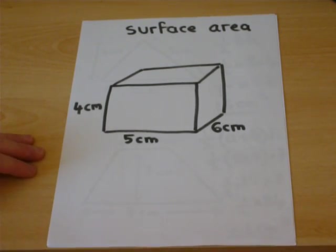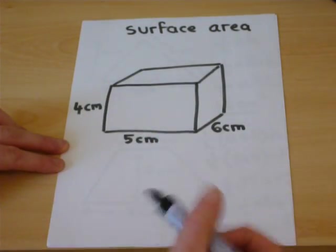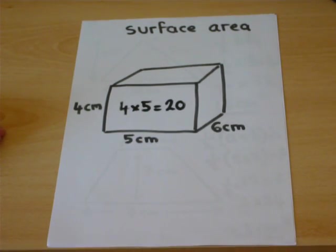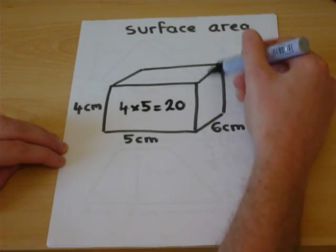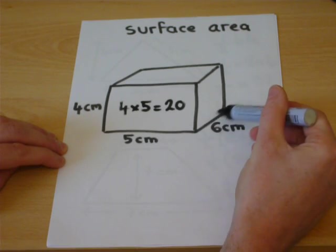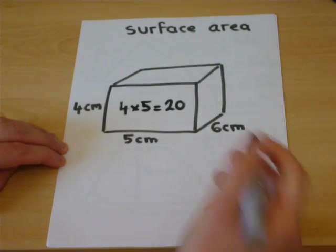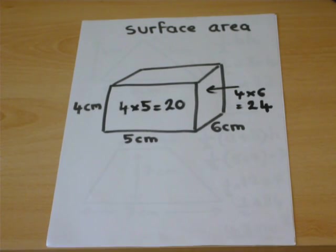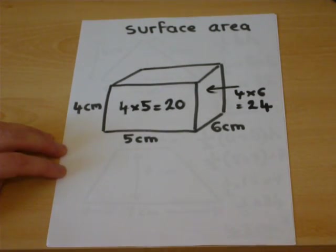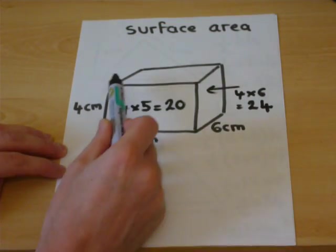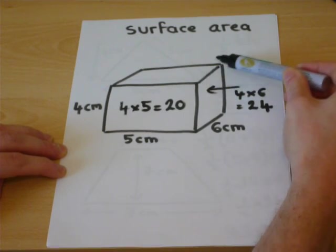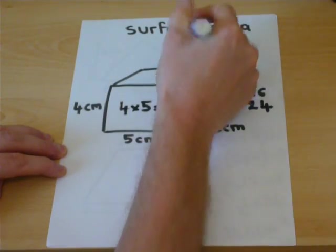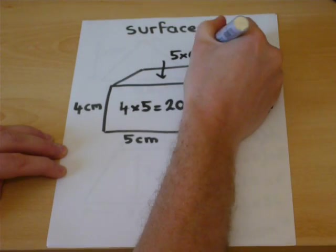For example, we could find the area of this face. It's a rectangle. Four times five, which is twenty. We could find the area of this face, which has a width of six and a height of four. Four times six is twenty-four. We could also find the area of the top of the shape. It's got a width of five and goes into the page by six. Five times six equals thirty.